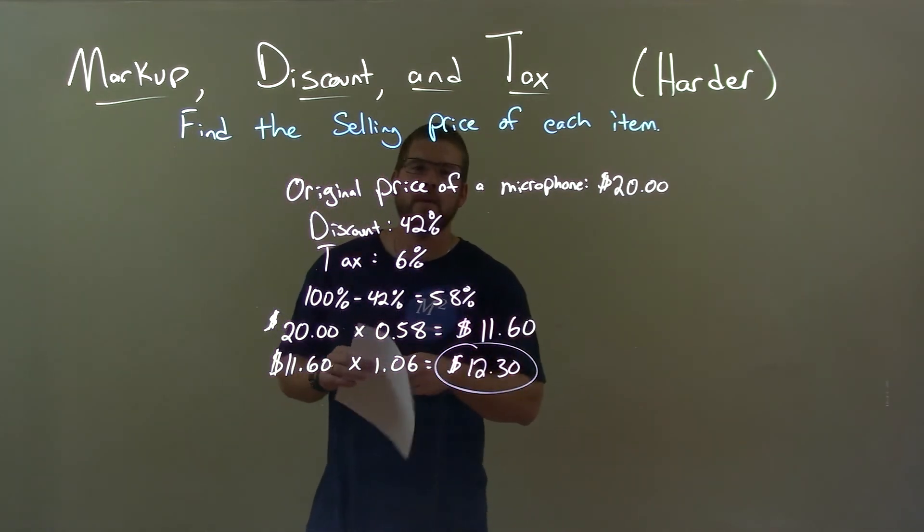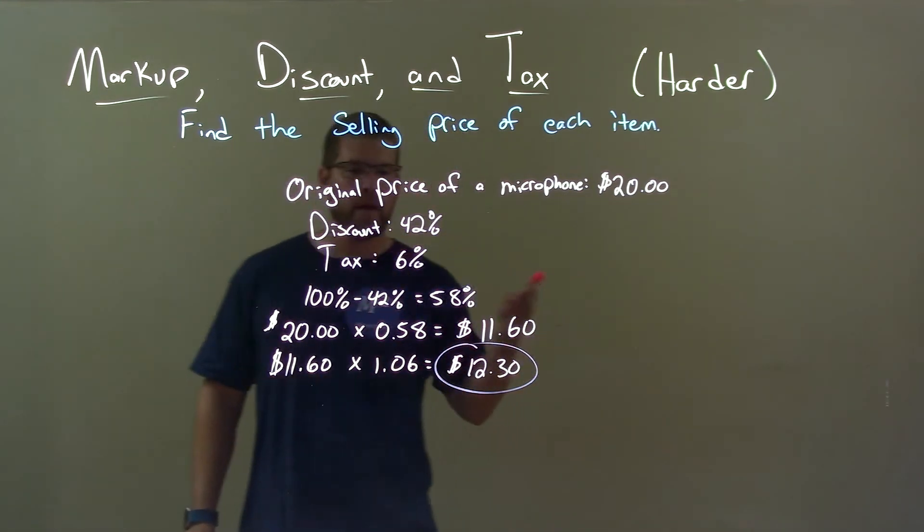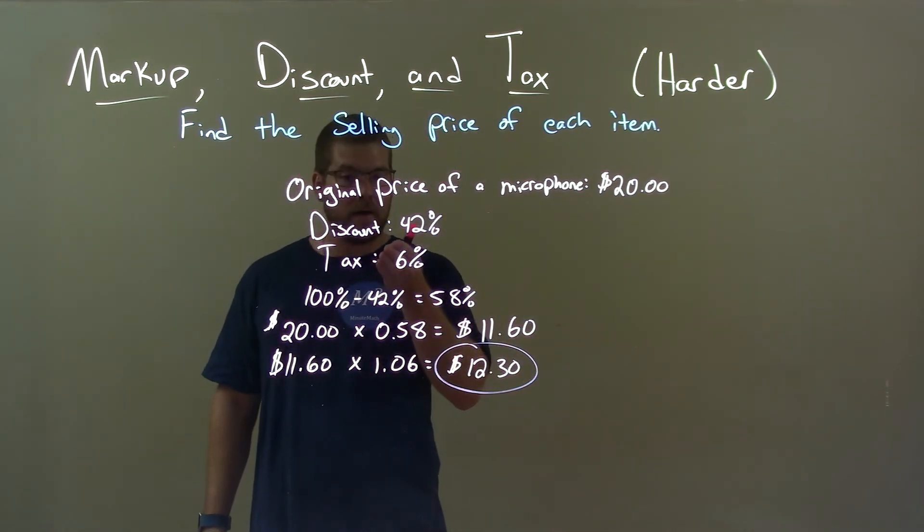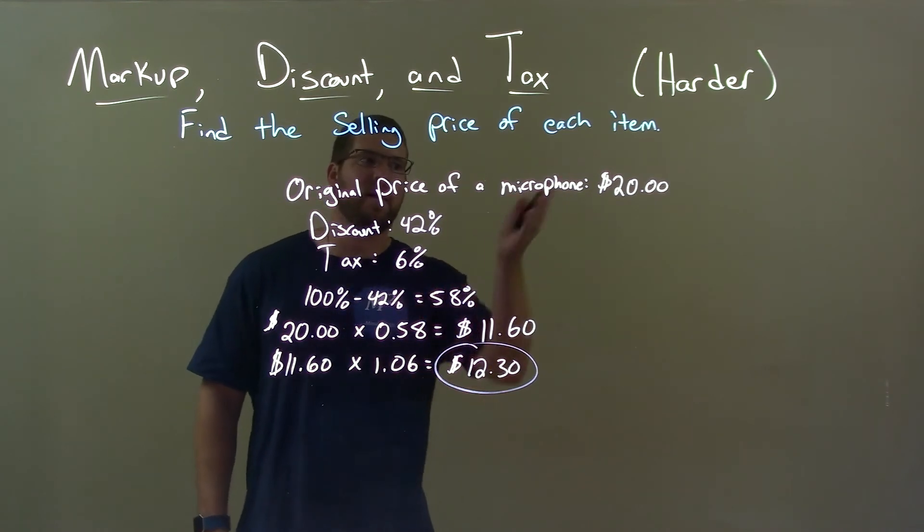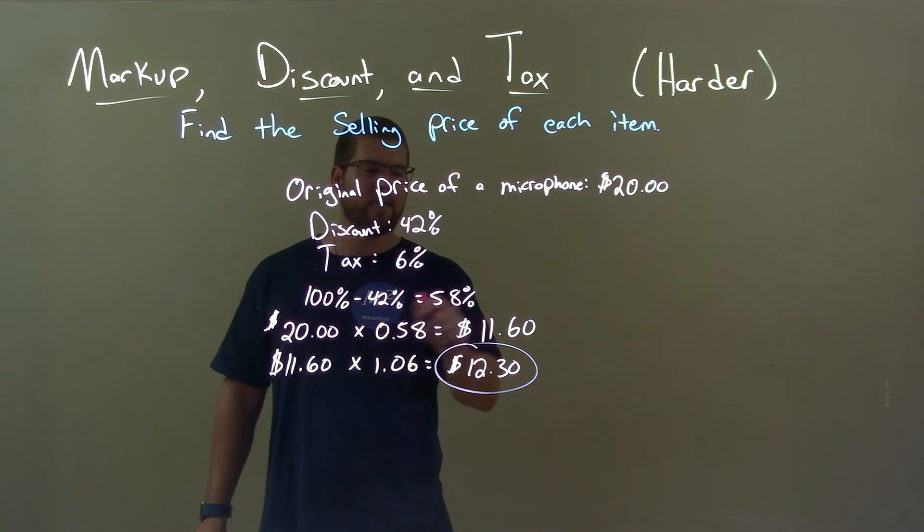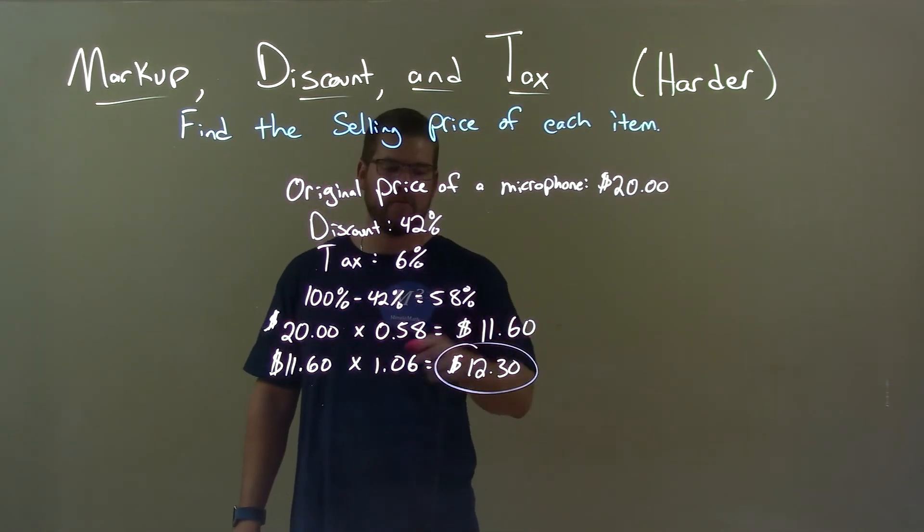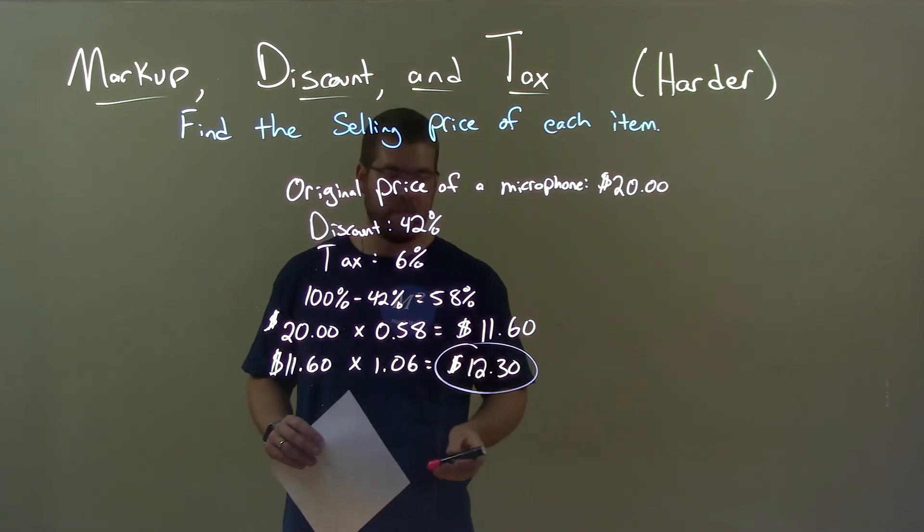Quick recap: we're given the original price of a microphone is $20 and the discount is 42% and tax is 6%. Well, 42% discount means we pay 58% of the price. Calculate that, ends up being $11.60, multiply that by our tax of 1.06. We got a final answer here of $12.30 for that microphone.